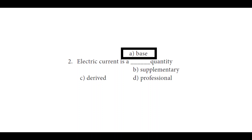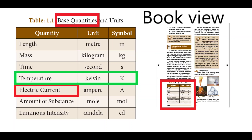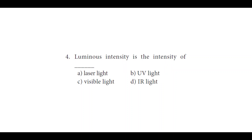We will move on to the third question. The SI unit of temperature is ___. We have four options: A: Celsius, B: Fahrenheit, C: Kelvin, and D: Ampere. Looking at the table of basic quantities and units, in the fourth row, temperature has the unit Kelvin with the symbol K. So the answer is C: Kelvin.